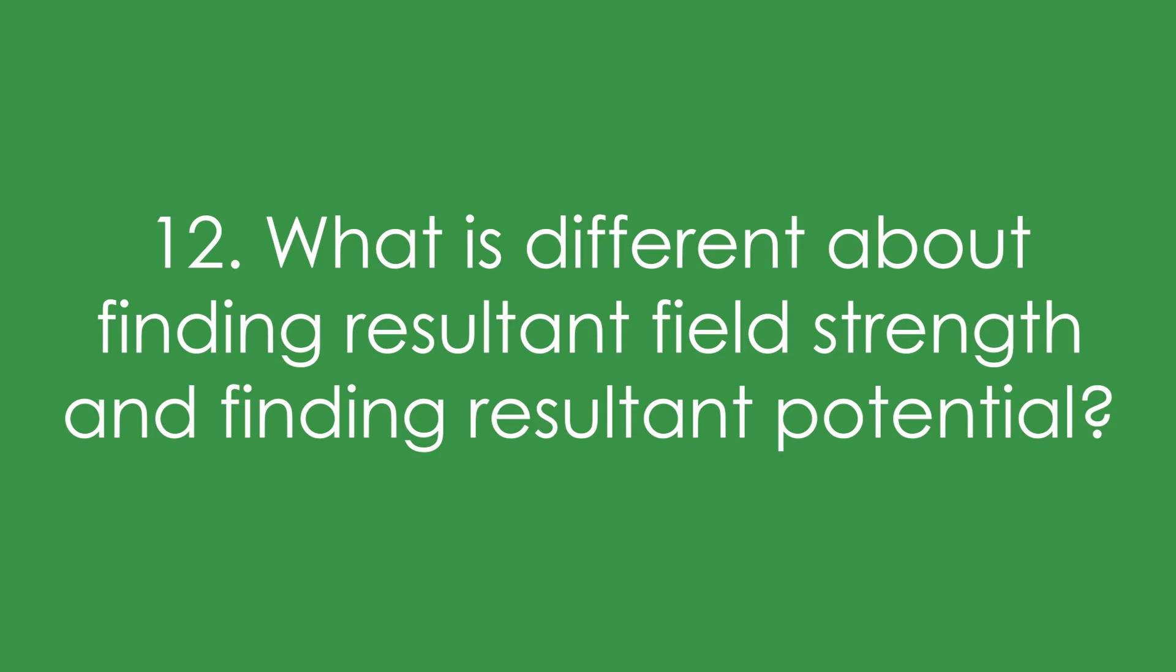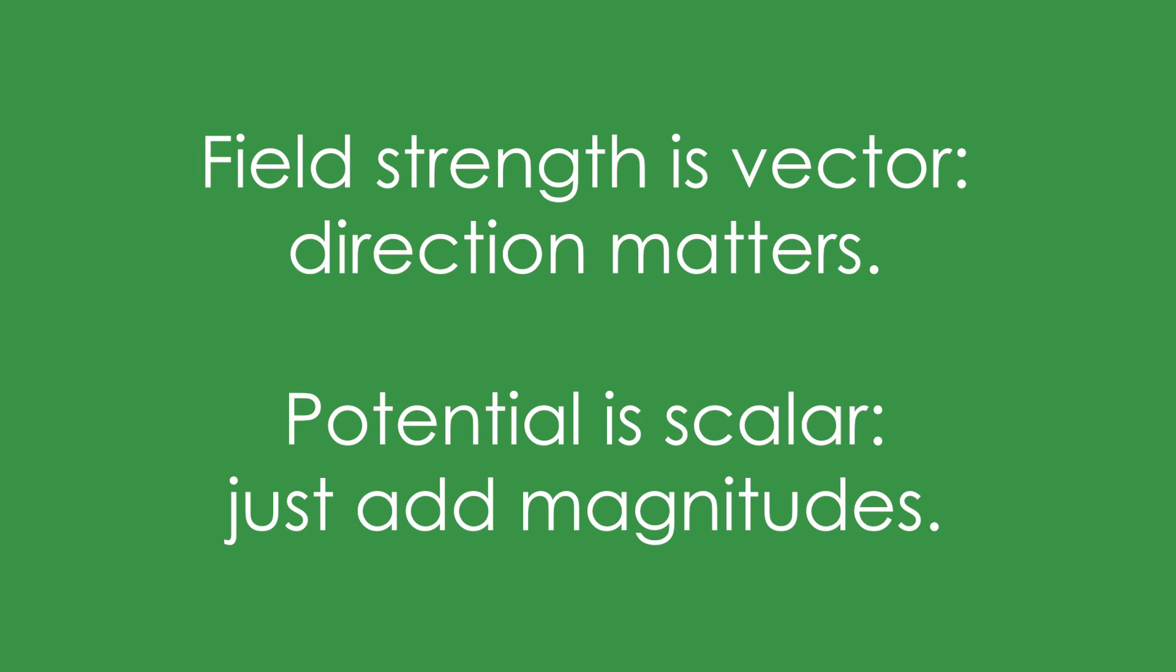Twelve, what is different about finding resultant field strength and finding resultant potential? Field strength is a vector, so that means direction matters. So if two planets are pulling in opposite directions, then the field strengths cancel each other out at some point. However, for potential, it's a scalar, so we only add the magnitude.